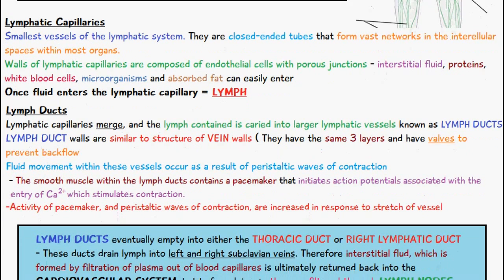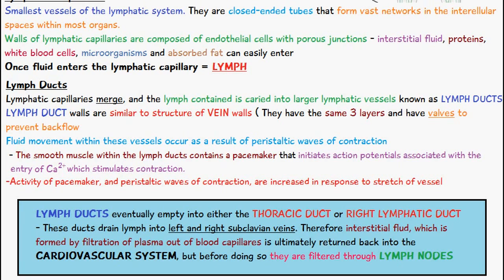Lymph ducts eventually empty into either the thoracic duct or the right lymphatic duct. These ducts drain lymph into the left and right subclavian veins, and therefore interstitial fluid — which is formed by filtration of plasma out of the blood capillaries — is ultimately returned back into the cardiovascular system. But before doing so, it is filtered through lymph nodes.